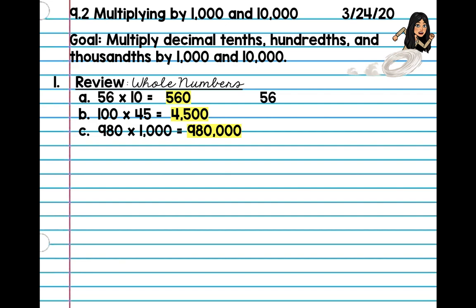So if you guys got that right, you guys already know that 56 is really 56.0. And because it is a whole number, it is to the left of the decimal. So what you guys did is when you multiplied that by 10, you moved your decimal place over once, because it's one zero. And you put a zero in that place, so your new number is 560. So the product is 560. You did the same exact thing for 45 — you move your decimal place over twice, 1, 2, and that's how you got 4,500. So you're going to put that same exact concept and include that in the decimal problems.